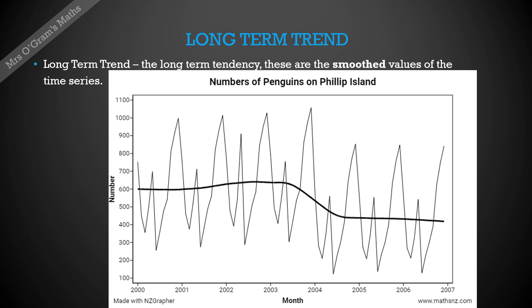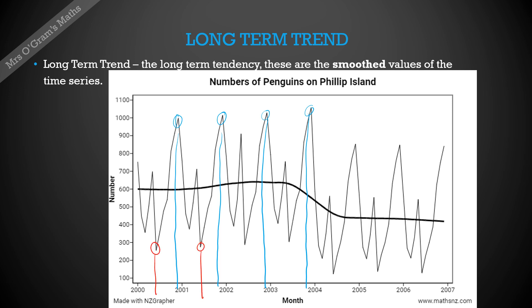The smoothed values don't give us the whole picture — just the average. We actually have quite a lot of fluctuation within each year. We get high peaks that are happening regularly, always coming in towards the end of each year, and we also get a trough about halfway through, and that's happening in each of the years. What we're noticing here is that there are seasonal effects — our graph has seasonality.